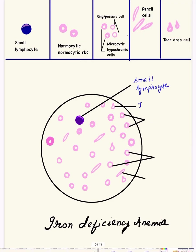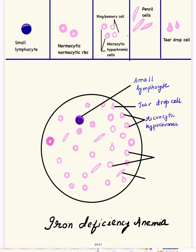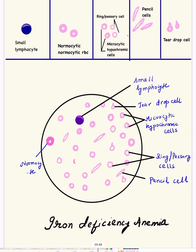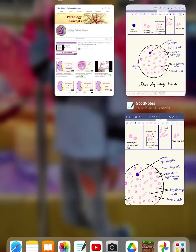Then we label the diagram — it is very simple. We label the small lymphocyte first, then the teardrop cells, then the microcytic hypochromic cells, then the ring cell or pessary cell which shows increased central pallor with only a rim of cytoplasm, then the pencil cells, and lastly a normocytic cell. This is how we make the final diagram.